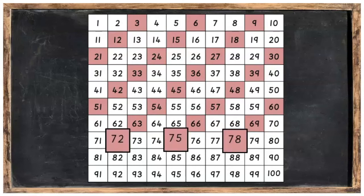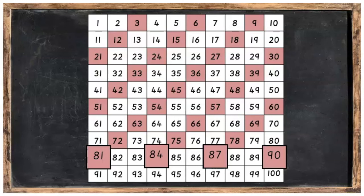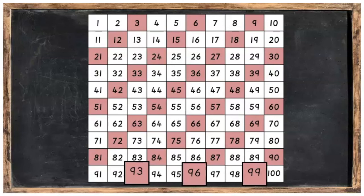After that, seventy-two, seventy-five, seventy-eight. Eighty-one, eighty-four, eighty-seven, ninety. And finally, ninety-three, ninety-six, ninety-nine.